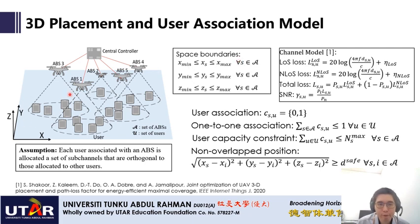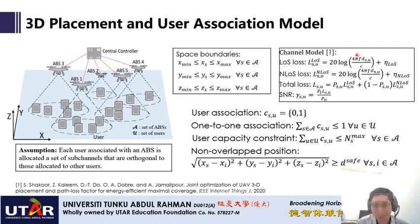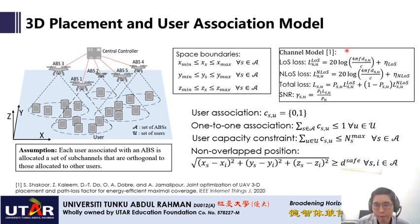The area covered by the aerial base stations is bounded by space boundary constraints, and the altitude of the aerial base stations is also bounded from a certain minimum to a certain maximum altitude. We consider the air-to-ground communication channel model, which includes line-of-sight path loss and non-line-of-sight path loss. The total path loss is the combination of both, and from this path loss model we can derive the signal-to-noise ratio between each aerial base station and each user.